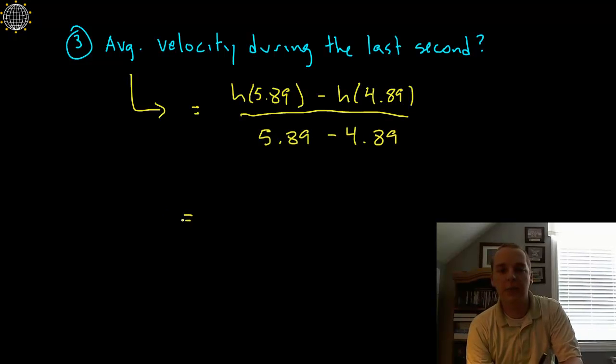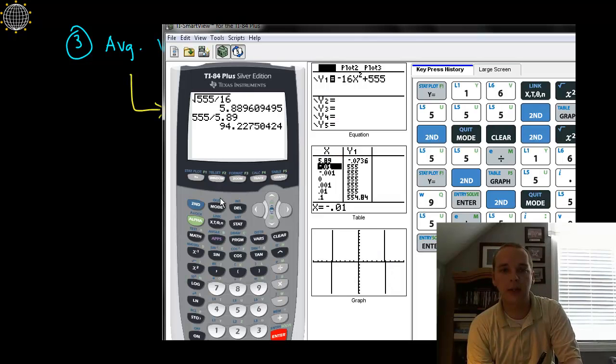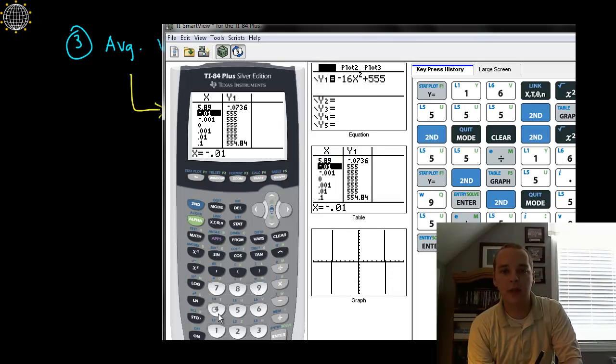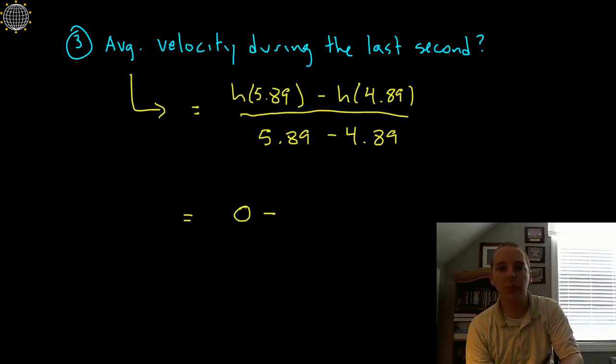Now the easy part is this numerator is obviously 1 and I know the height at 5.89 seconds is on the ground. So really I have to find the height at 4.89 seconds. So for that I'll go to my TI and I'll ask what's the height at 4.89 seconds. It tells me it's about 172.41.